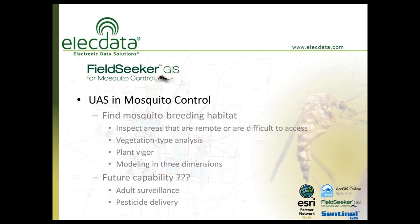Using other sensors, we can look at vegetation type — a predictor of standing water could be vegetation species or type. Using infrared, we can assess plant vigor, where very vigorous plants indicate a plentiful supply of water. Three-dimensional modeling can identify low spots compared to the surrounding area where water can build up. Additionally, a future project called Project Premonition, led by Microsoft, integrates adult surveillance techniques, genome sequencing, and wireless communication. Another future capability would be pesticide delivery to difficult-to-reach areas.